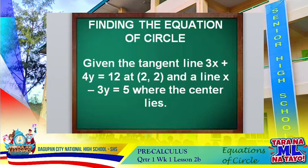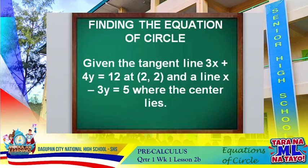Our lesson is finding the equation of a circle given a tangent line and a center line. The tangent line is 3x plus 4y equals 12 with a point of tangency at (2, 2), and the center line where the center lies is x minus 3y equals 5. As we know, to find the equation of a circle we need the coordinates of the center and the length of the radius.